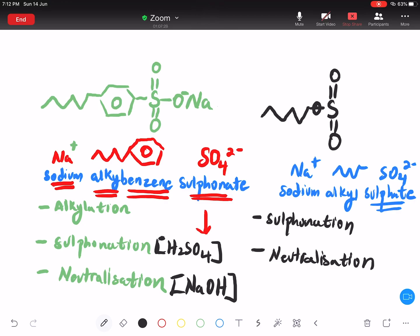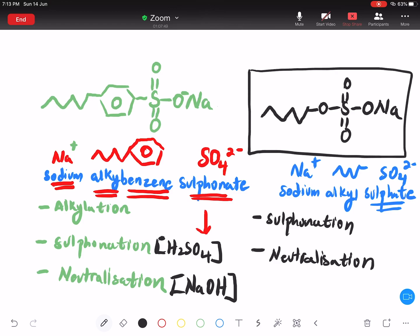Gini. Tapi, dia ada O dekat sini juga. Guys, benar, benar, benar. O, double bond O, double bond O, N, O, N, A. Inilah bezanya. Inilah sabut. Eh, inilah detergent. Dua jenis detergent.